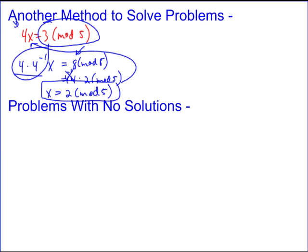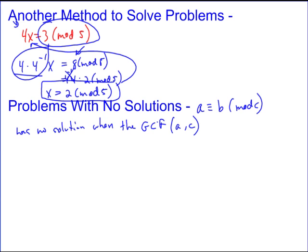Okay, problems with no solutions. Well, that occurs when, if you've got A ≡ B mod C, that occurs when, has no solution when the greatest common denominator, or greatest common factor of A and C, so whatever A and C are, if the greatest common factor of those does not divide B, then there is no solution.